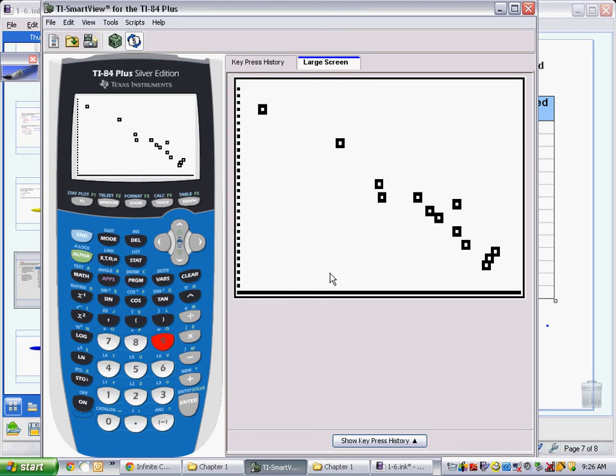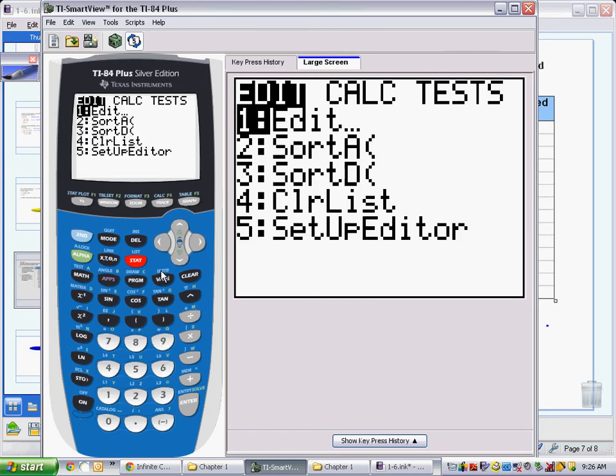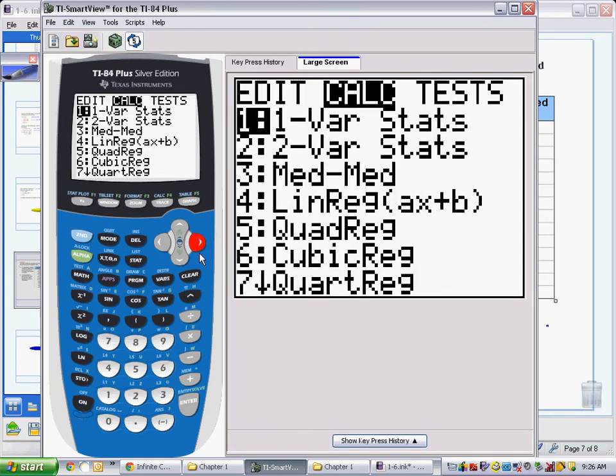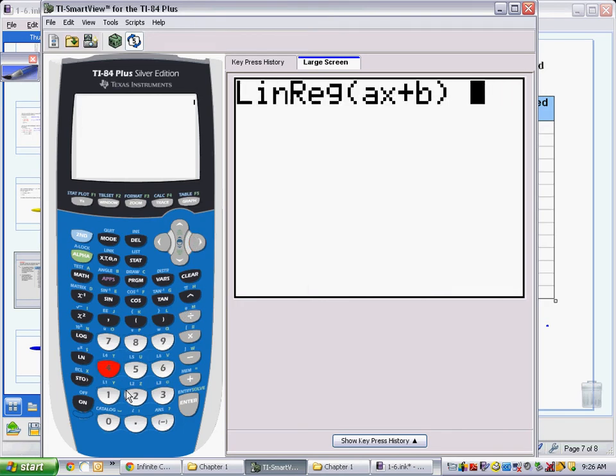Now this is great, but it doesn't do a whole lot for us. Let's say I actually wanted to go and see a regression equation in here. To calculate the regression equation, I go back to the stat menu and move over to calculate. I want a linear regression that will best fit this data set, so I'll choose option number 4.